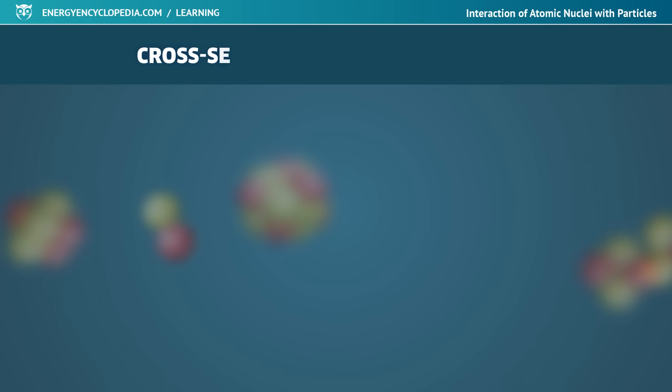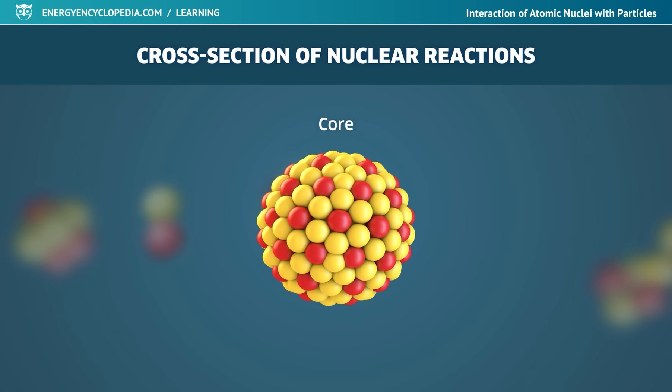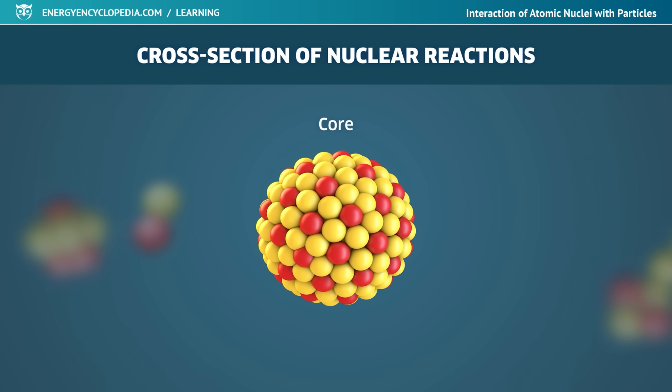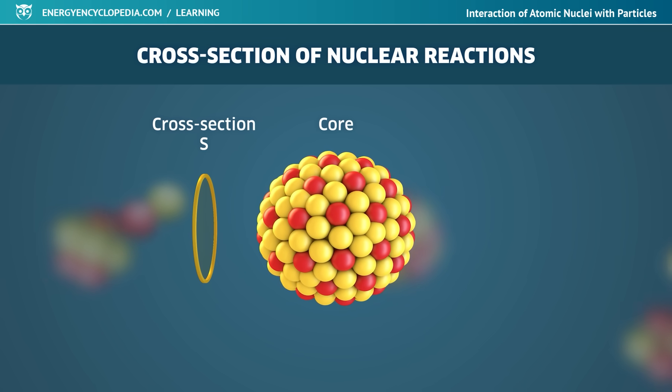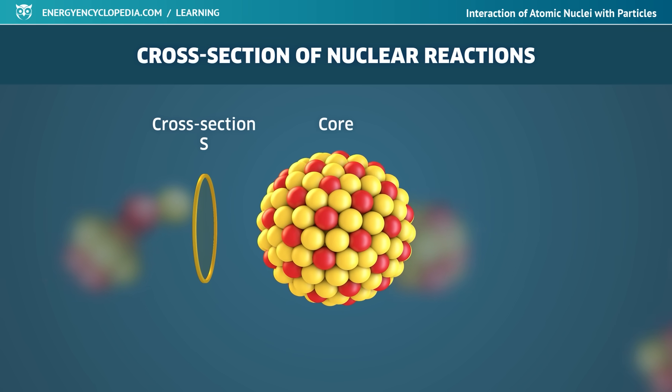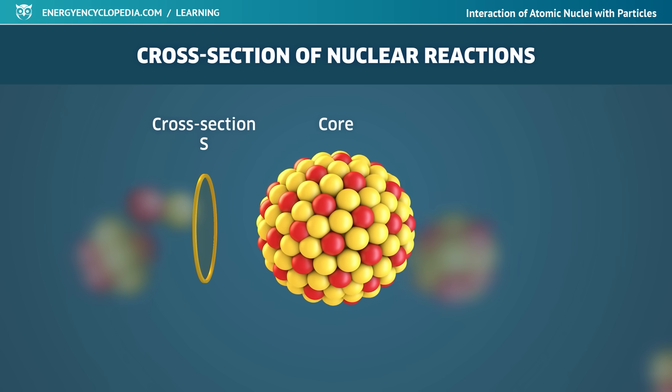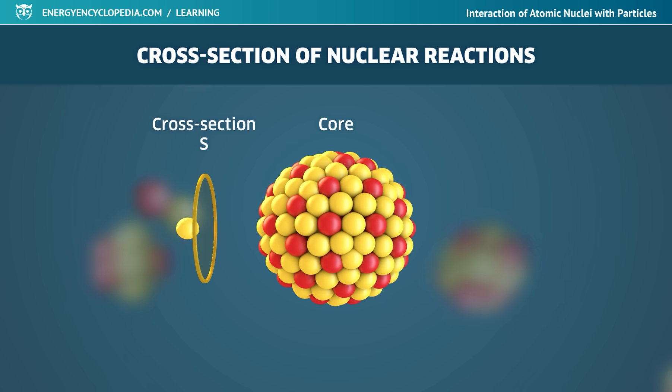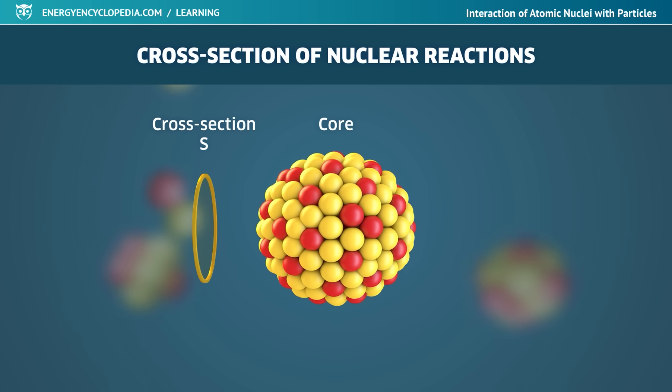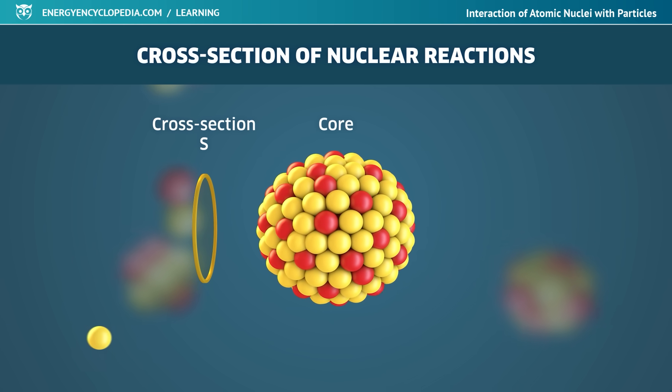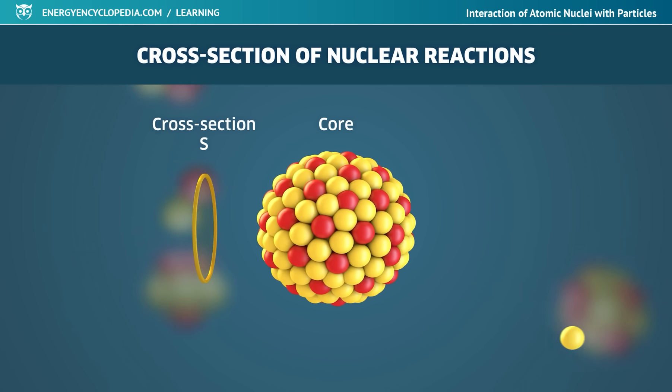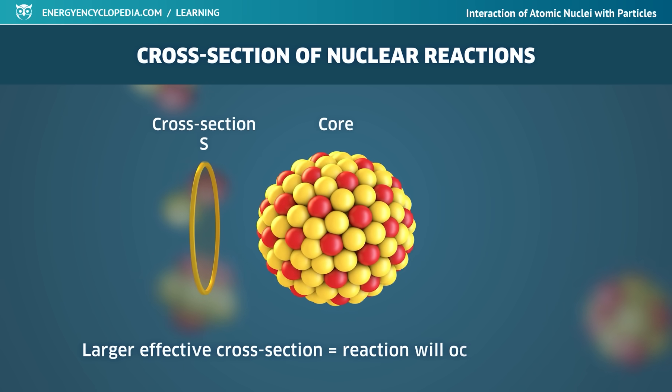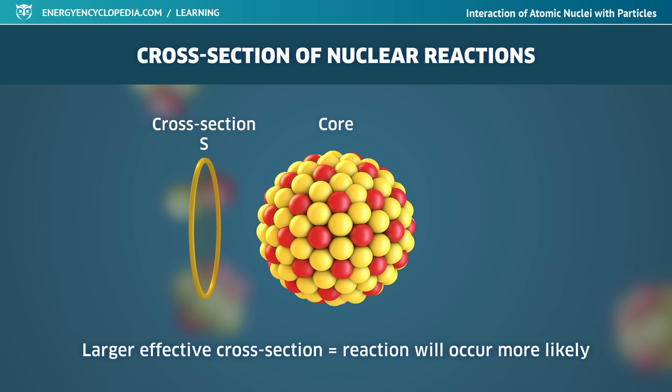The probability that a flying particle will interact with a nucleus in a particular way can be graphically expressed using the cross-section of a given nuclear reaction. We could imagine this cross-section as a circular area in front of the shelled core. If this particle flies through this surface, the given nuclear reaction will occur. If it flies outside the surface, the reaction will not occur. The larger the cross-section, the greater the probability that the reaction will proceed in a given particular way.